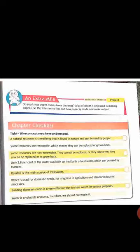Only 2.8% of water available on Earth is fresh water for humans. Rainfall is the main source of fresh water. Water is used for domestic needs, for irrigation in agriculture, and also in industrial processes. Building dams on rivers is a very effective way to store water for various purposes. Water is a valuable resource, therefore we should not waste it.